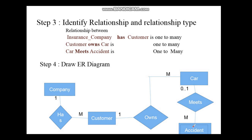Car meets accident. The accident entity set has been taken as a weak entity set, represented by a double rectangle. The reason is that the accident entity set is totally dependent on the car — if there is a car, then an accident can happen; if there is no car, there is no accident. That is why accident is taken as a weak entity set, and car is the strong entity here.